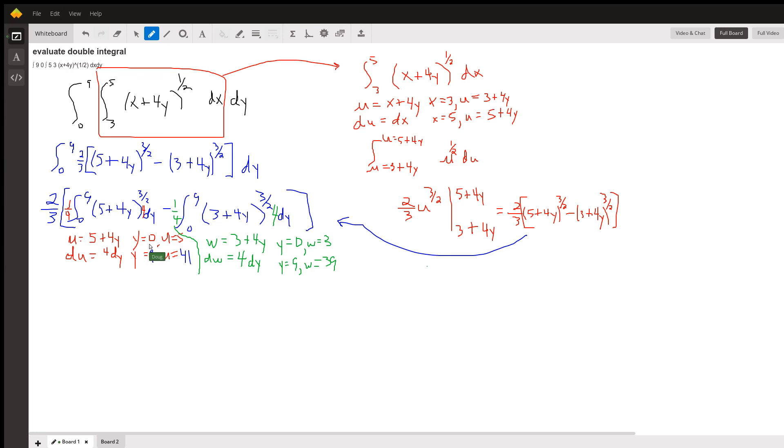When y equals 0, u equals 5. And when y equals 9, u equals 41. So that'll change these limits here. But du is 4 dy, so I had to put a 4 in front of the dy and a one-fourth out front.